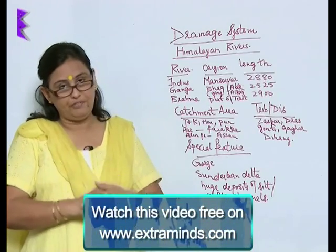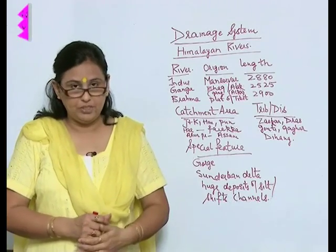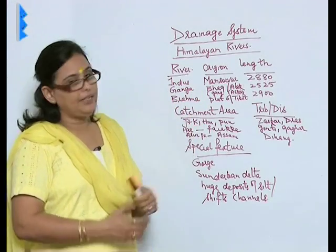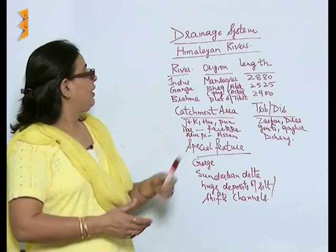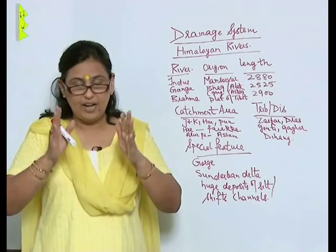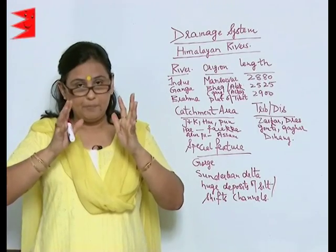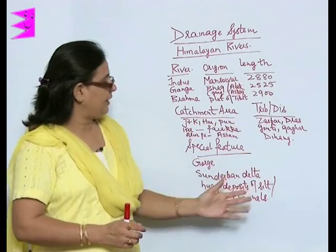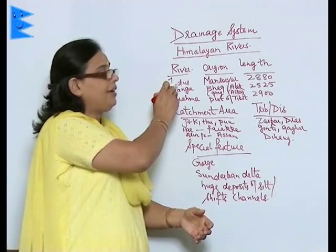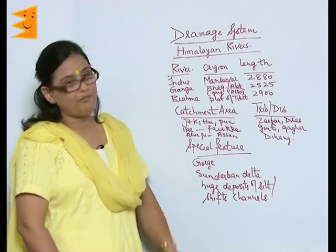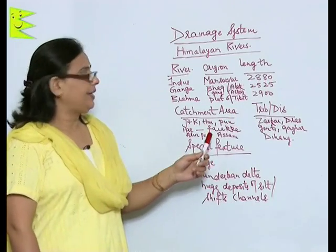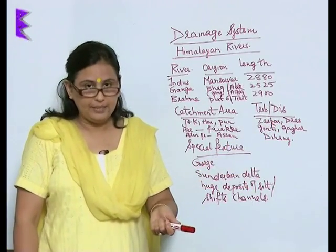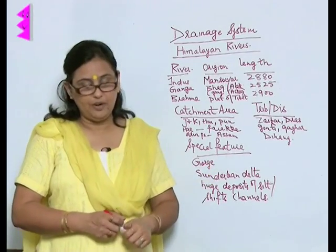When we talk of the first type, the Himalayan rivers, we have to basically understand the Indus, Ganga, and the Brahmaputra rivers. I have divided all of it into certain headings: the name of the river, the place of origin, the length of the river, the catchment area from where it flows, the tributaries or distributaries it has, and any special feature of that river.